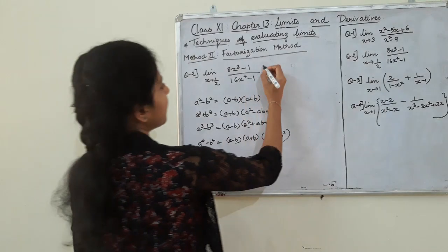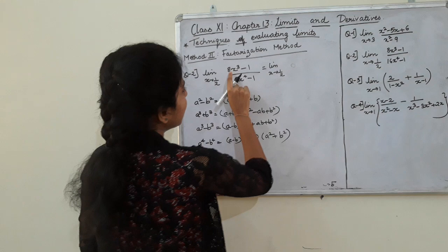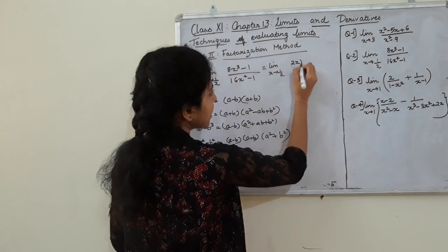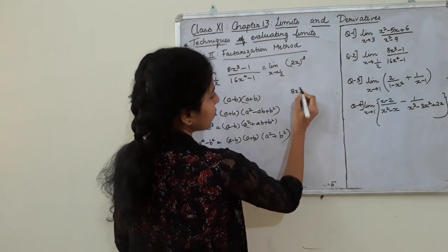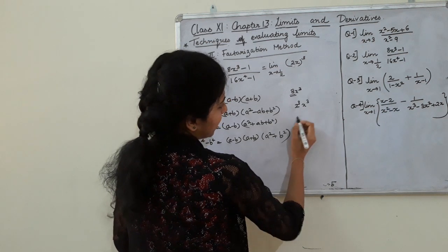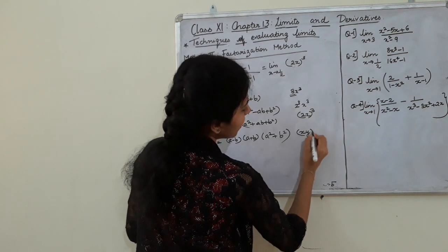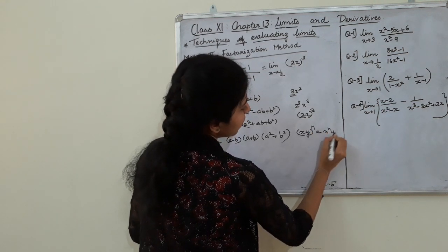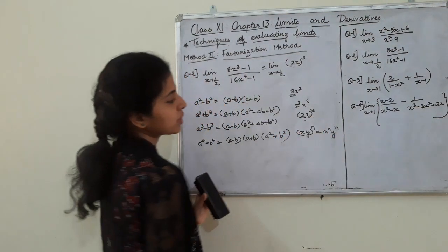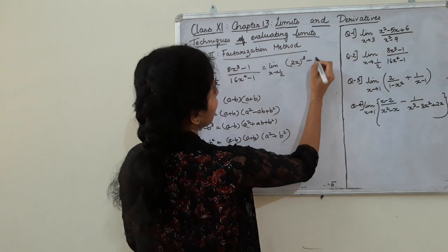So this is the limit as x tends to 1/2. We rewrite the numerator 8x³ - 1 as (2x)³ - 1³, which can be factored using the a³ - b³ formula. Minus 1.